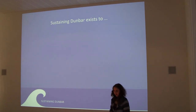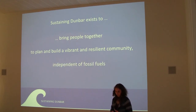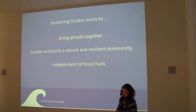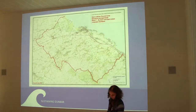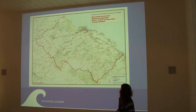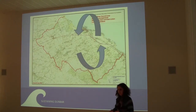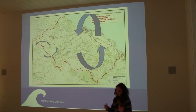Sustain Dunbar is part of the Transition Network — the International Transition Network originally — with a focus on bringing people together. It's a very much community organisation, bringing people together to plan and build a resilient community that's independent of fossil fuels. That's the underlying theme. This is the area we work in — the Dunbar Electoral Ward — covering about 12,000 people. We aim to keep as many resources within the community as possible and reduce the need to travel in and out.